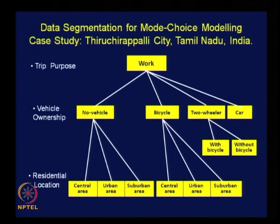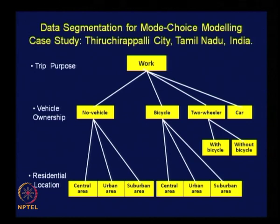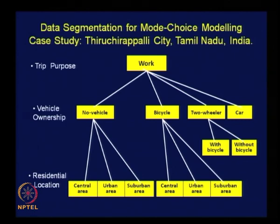So this picture clearly shows the approach for data segmentation for mode choice analysis. There are three primary bases for segmenting data, with a fourth one based on residential location when there is a significant change in modal characteristics over space. Let us now see how the variables were identified for modeling mode choice for work trips.